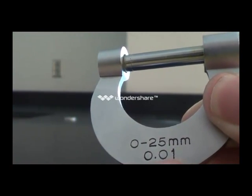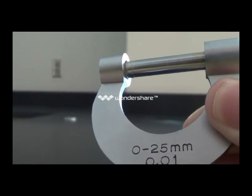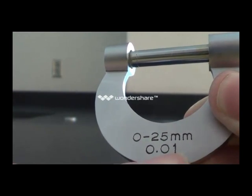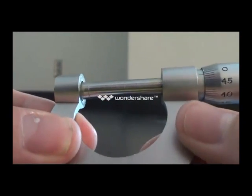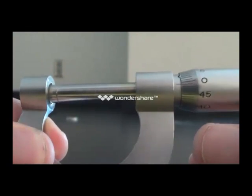The vernier caliper could measure something at an accuracy of 0.1. A meter stick can measure something at about an accuracy of 1 millimeter. No more accurate. This thing is 10 times as accurate as even a vernier caliper.